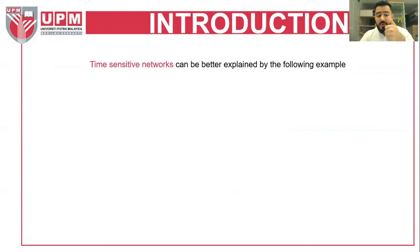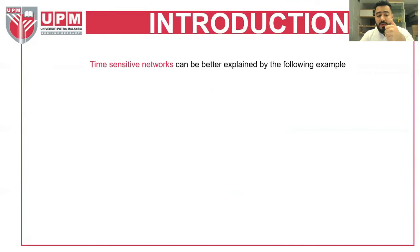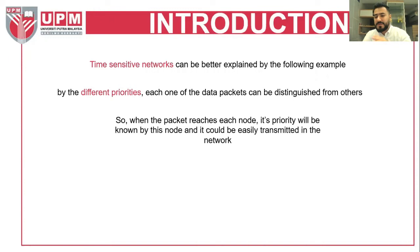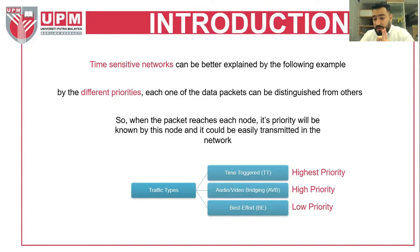Time-sensitive networks can be better explained by the following example. By assigning different priorities, each data packet can be distinguished from others, so when a packet reaches a node, its priority is known and it can be transmitted efficiently. The traffic types that the TSN task group deals with are three: time-triggered, which is the highest priority; audio-video bridging (AVB), which is also high priority; and best-effort, which is low priority.